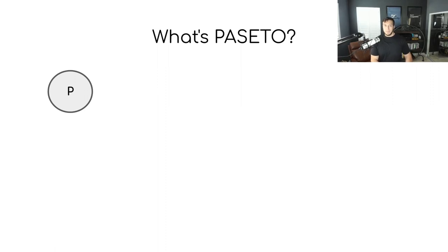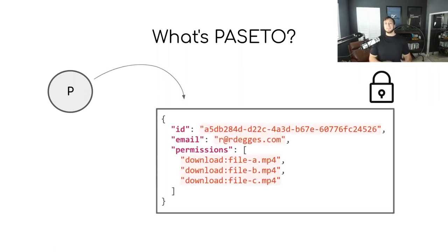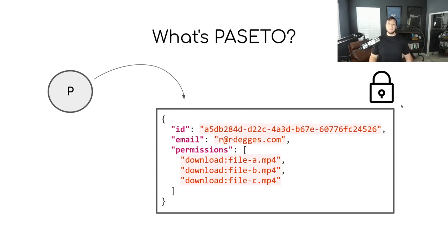The way you should think about a PASETO is that it's just a blob of JSON data that you want to securely transmit over the internet. That's essentially all it is. There are technicalities and different pieces of functionality, but at the end of the day it's a very simple concept — it's really just a blob of JSON data that you want to send over the internet.